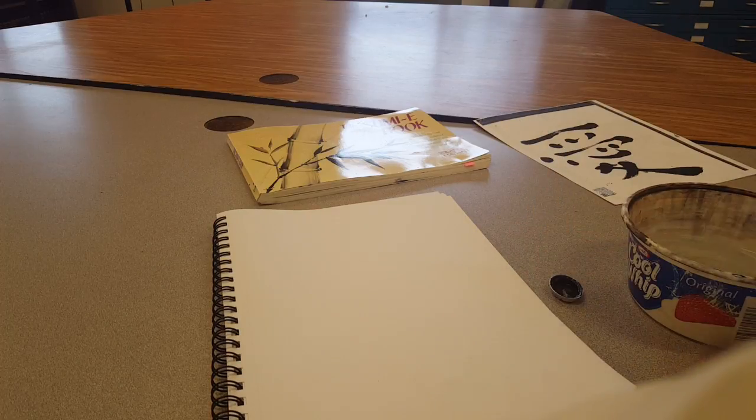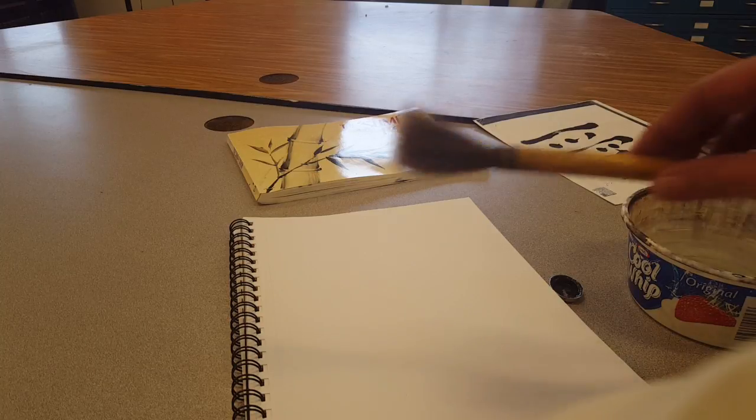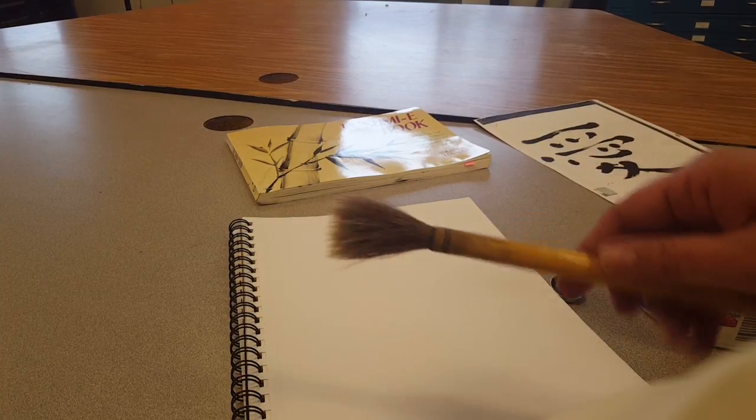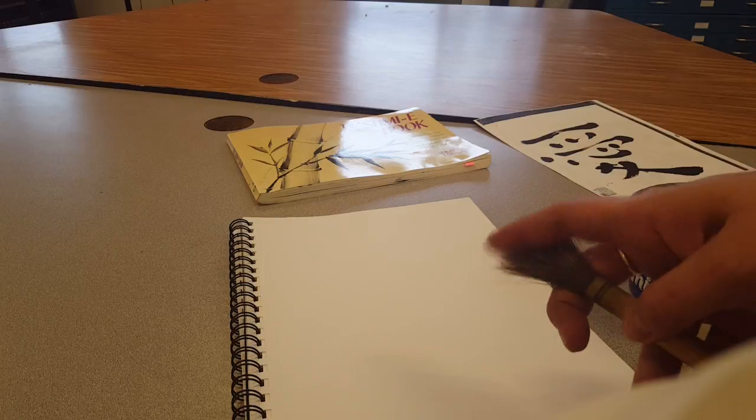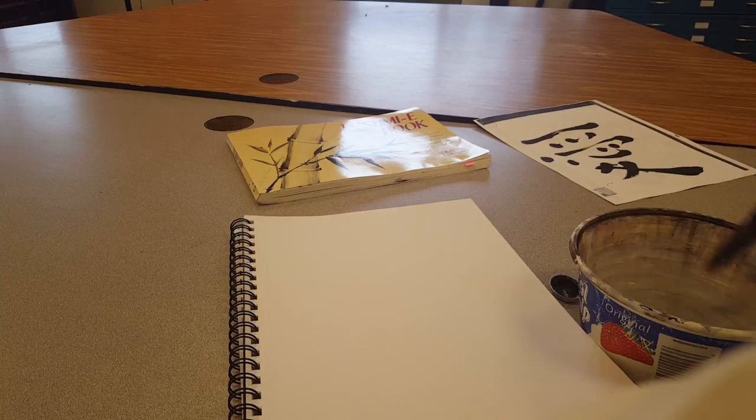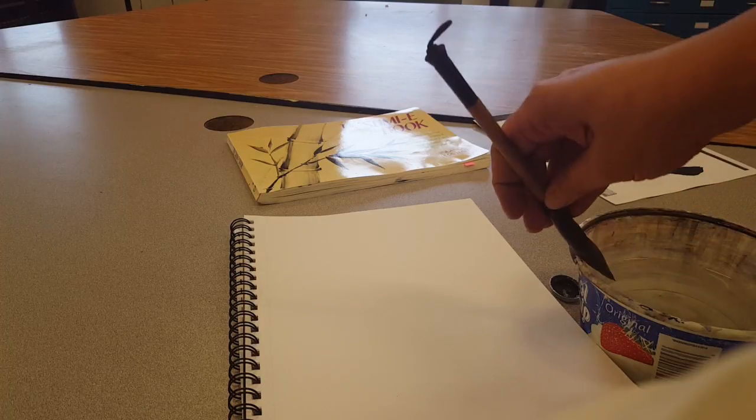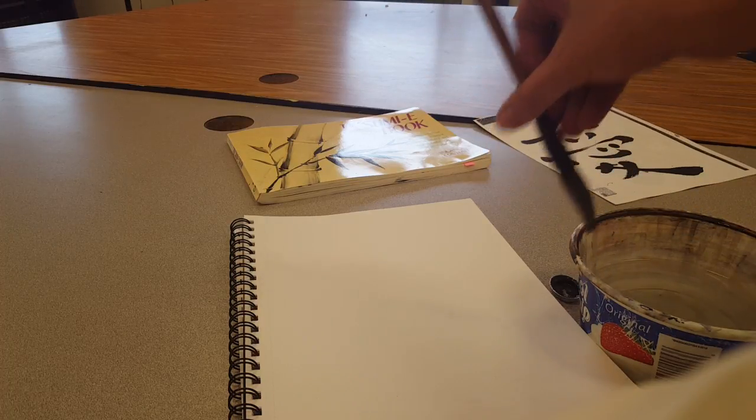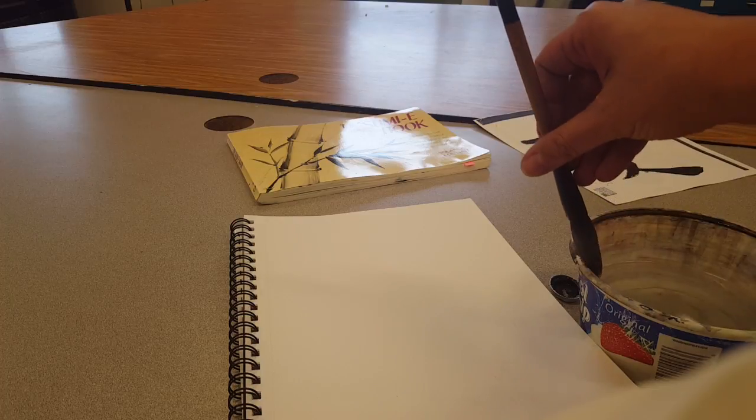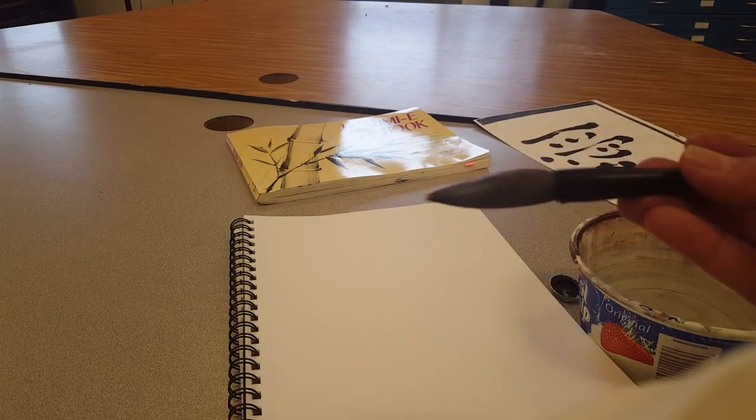Today we're just going to use black watercolor because it's a little bit more inexpensive. Now when you start with the bamboo brushes, they kind of look like this. But after you get them wet and put them in the water, you want to twist on the edge of the water cup. Twist just like that to create that nice point.